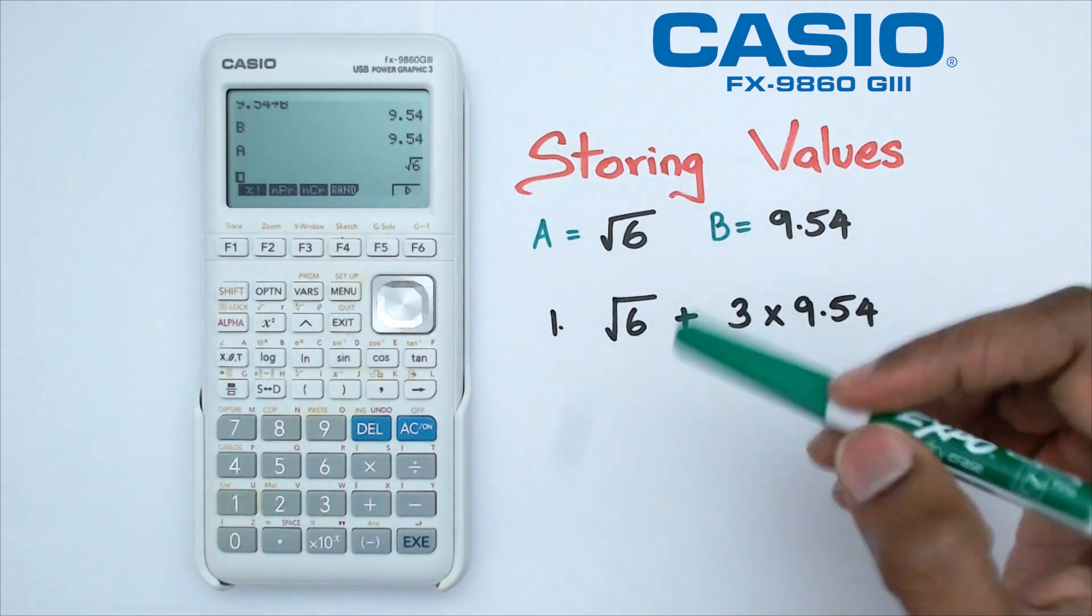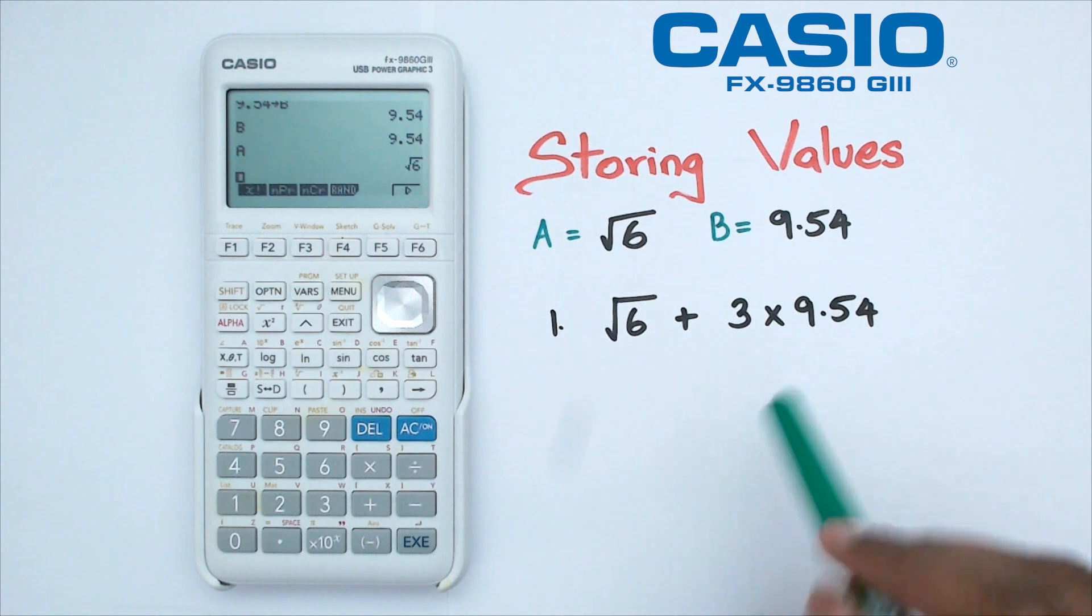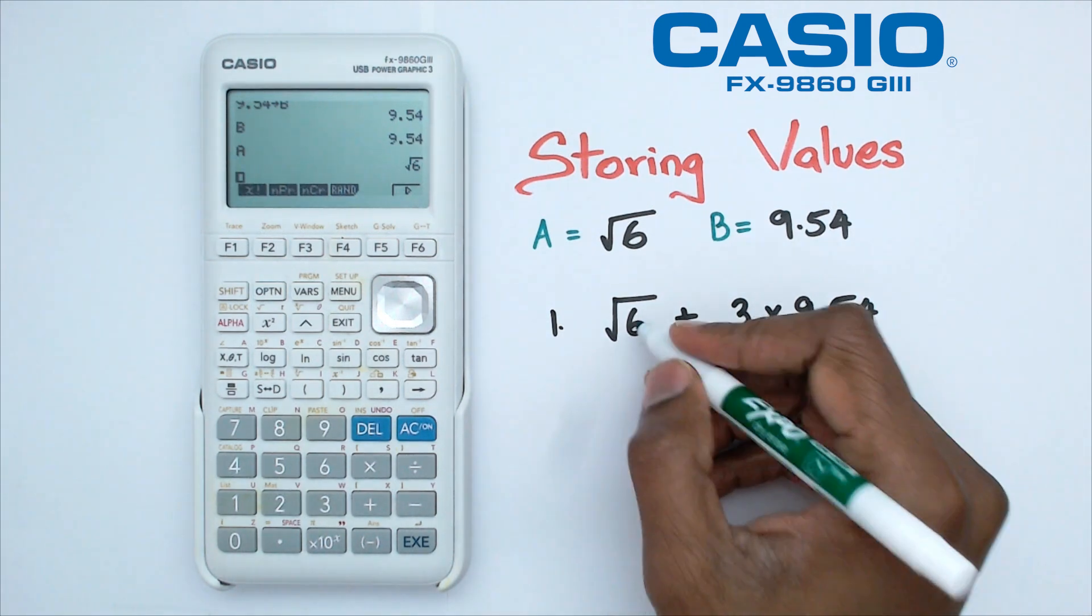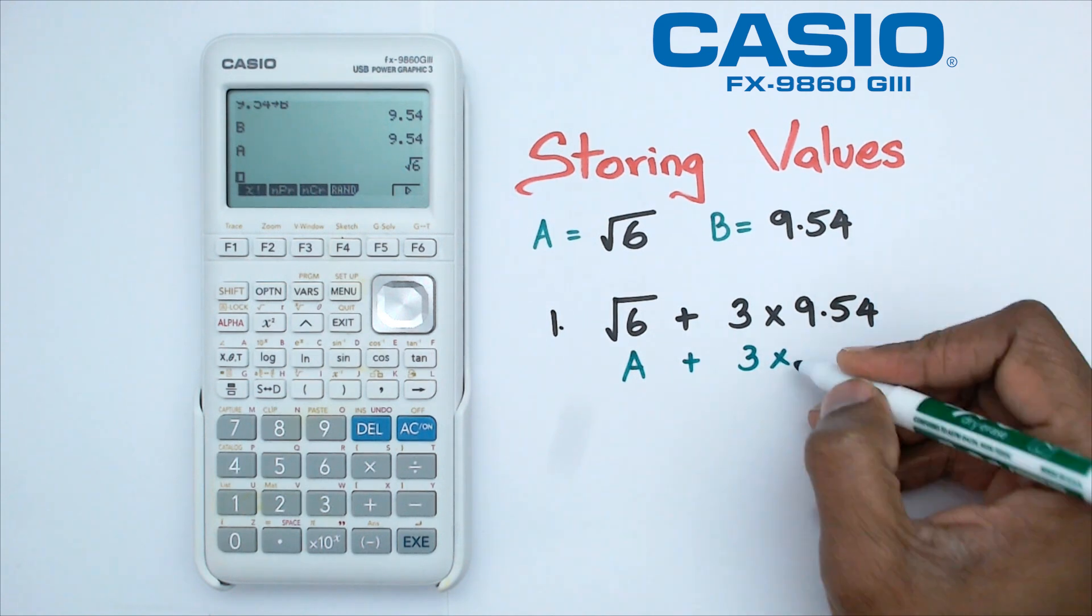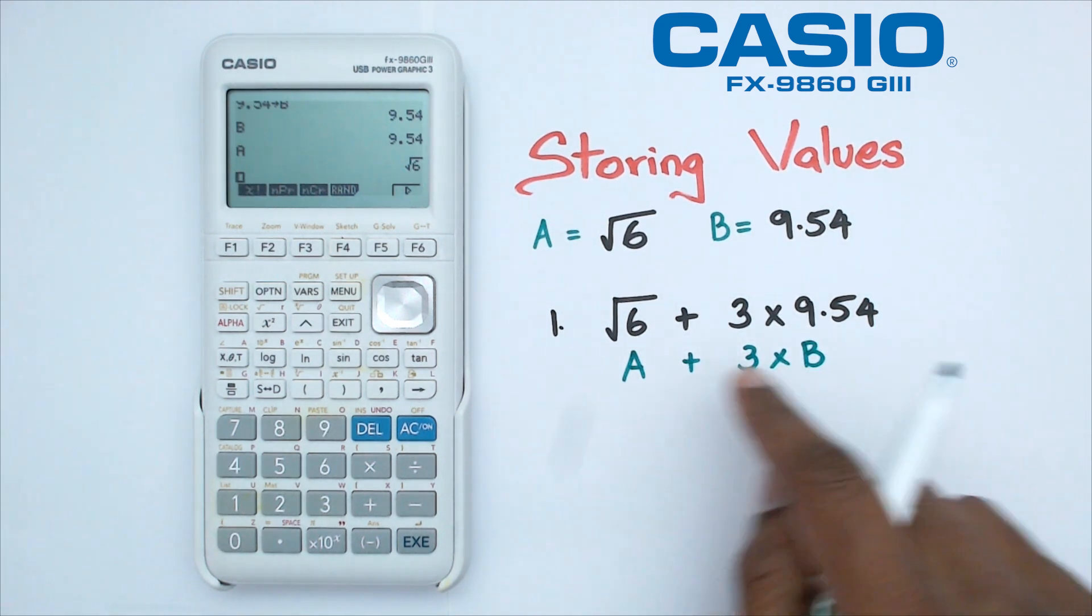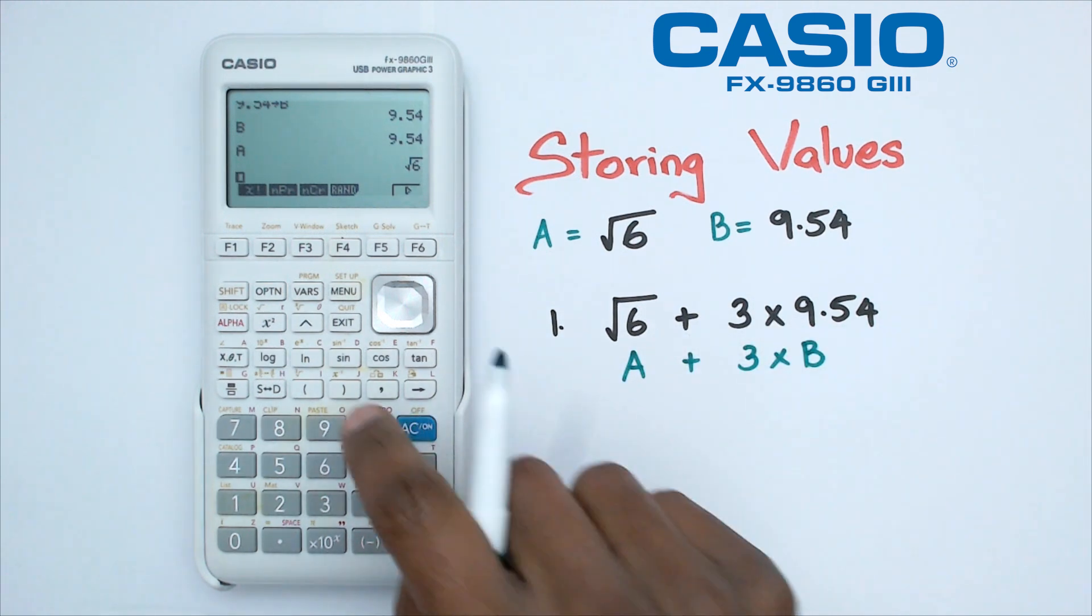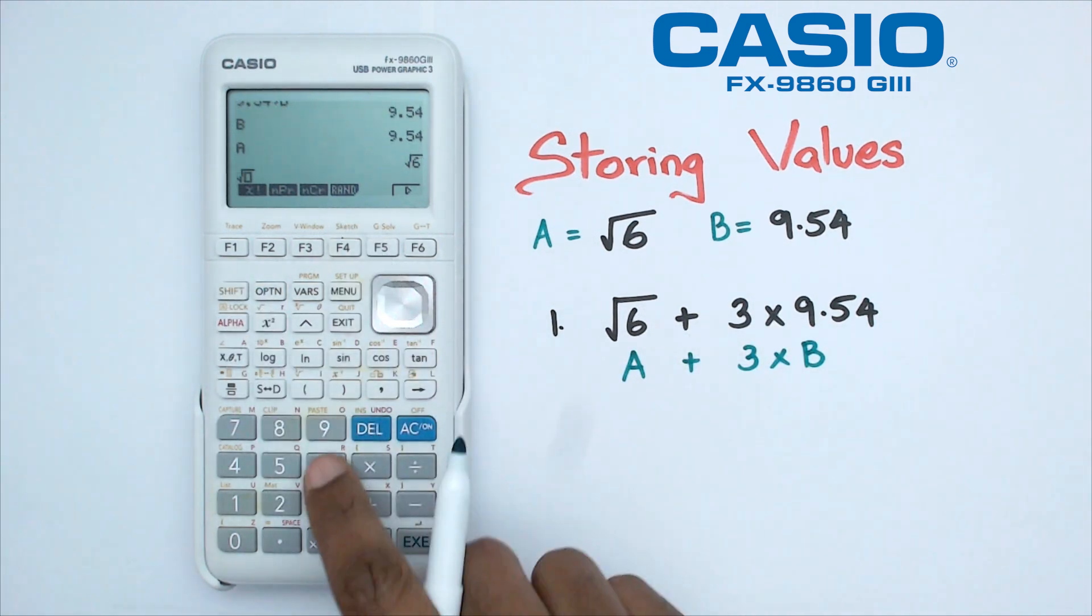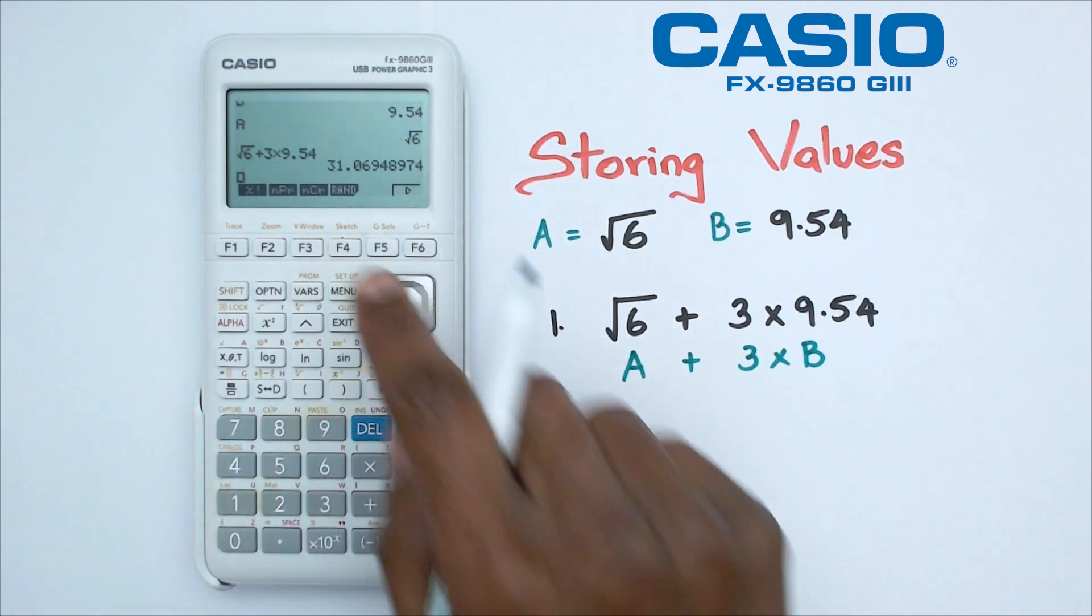All right, so let's say we want to actually calculate square root of six plus three times 9.54. What I can then do is because square root of six is A plus three times 9.54 is B, I could just put A plus 3B and I should get the same answer as square root of six plus three times 9.54. So let's try it out anyway. We've got square root of six plus three multiplied by 9.54 and that's equal to this long ugly-looking number.